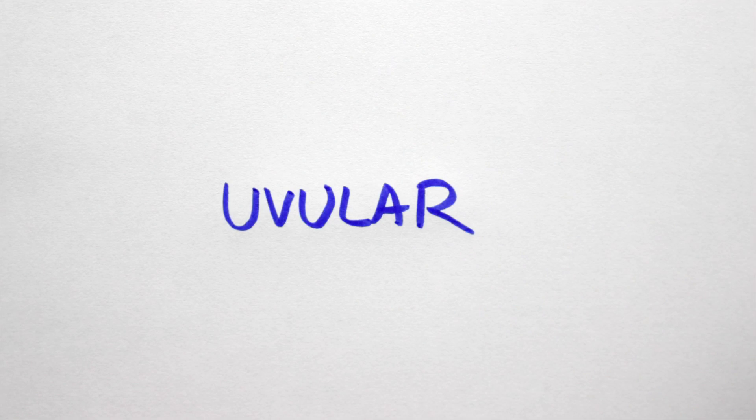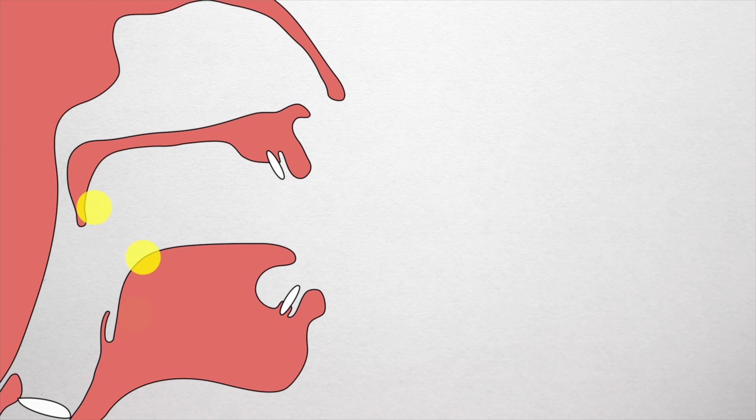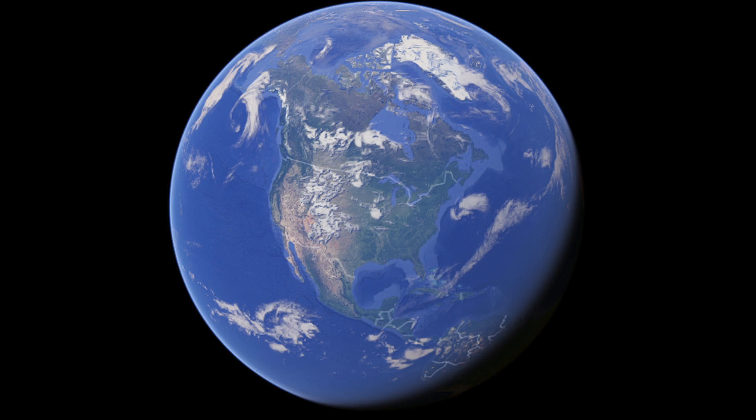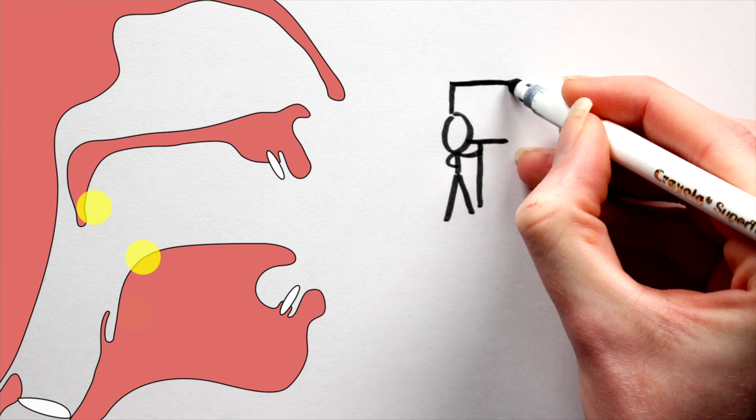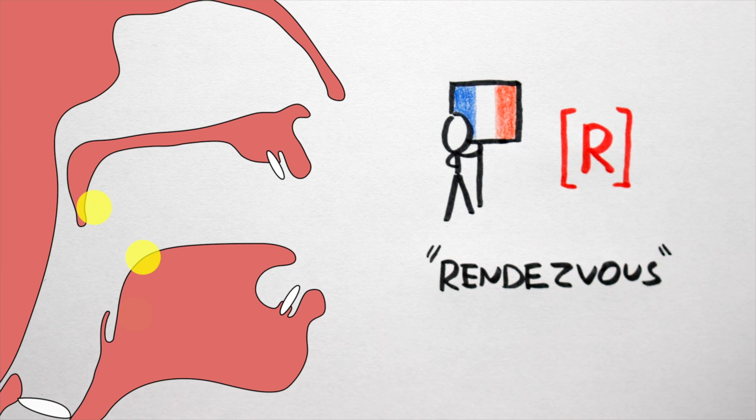Number nine, uvular. Here, the back of the tongue touches the uvula, that dangly bit at the back of your mouth. English does not have any uvular consonants, but they are widespread throughout African, Middle Eastern, and Native American languages, amongst others. Closer to home, French features a uvular trill, ra, as in rendezvous.